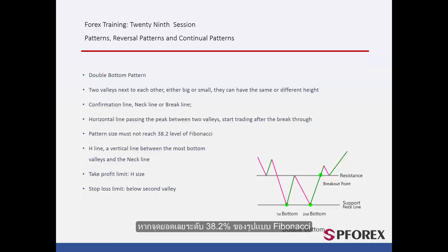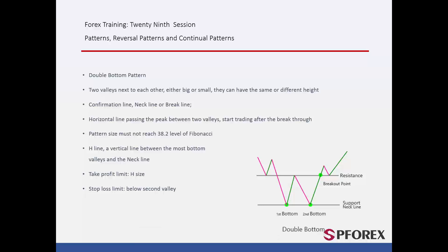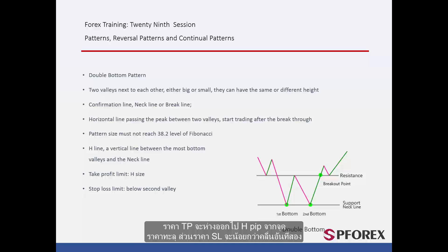If the peak point passes the 38.2% level on the Fibonacci pattern, which is drawn from the start point of the trend to the first valley, the double bottom pattern will not be reliable. H is the vertical distance between the bottom of the longest valley and the neckline. TP price is H pips away from the breakout point, while SL price is lower than the second valley.